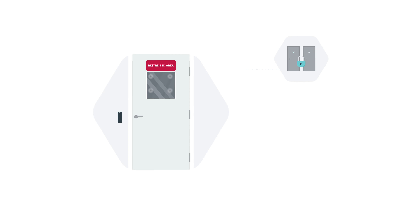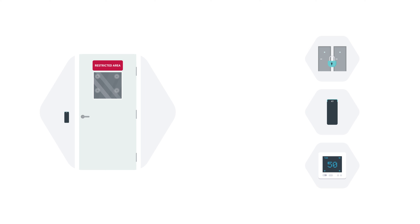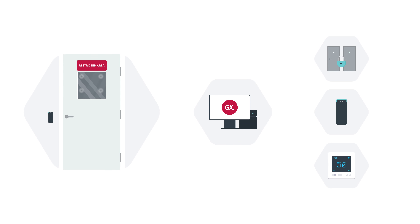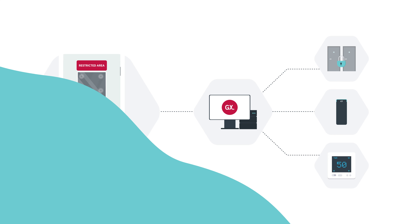Previously, you needed separate systems to control interlocks, access control, and building automation. ICT's unified platform means only one system to program and manage. Reporting and configuration changes are made easy.